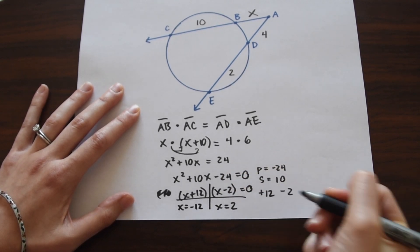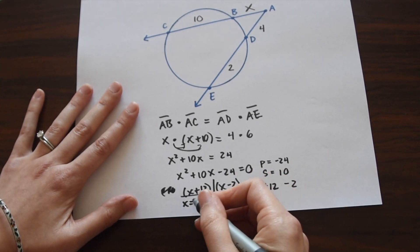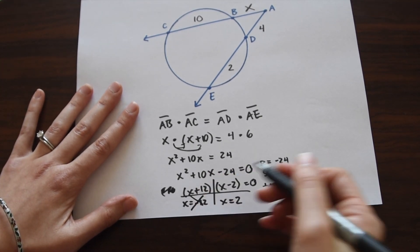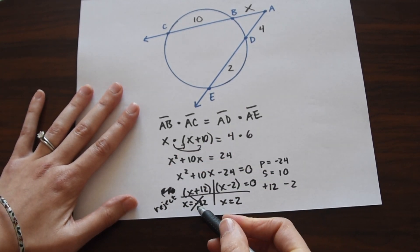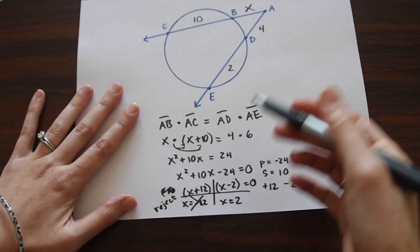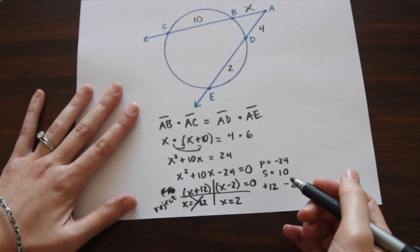So notice right away we have a negative value here. Right away we have to reject that because there's no way we could have a negative value for length in this circle, for this line segment. We cannot have a negative value.